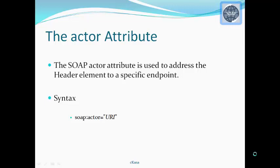The SOAP actor attribute is used to address the header element to a specific endpoint. The syntax is: SOAP colon actor, followed by the URI of the specific endpoint. A SOAP message may travel from the sender to a receiver by passing through various endpoints along the message path. However, not all parts of a SOAP message may be intended for the ultimate endpoint — it may be intended for one or more of the intermediate endpoints. The actor attribute specifies the address of the header element to that specific endpoint.